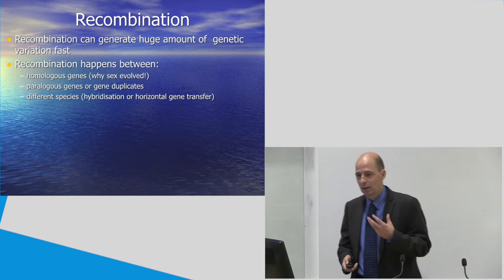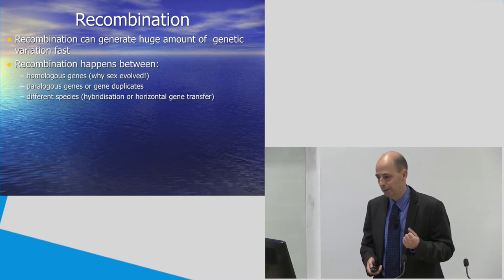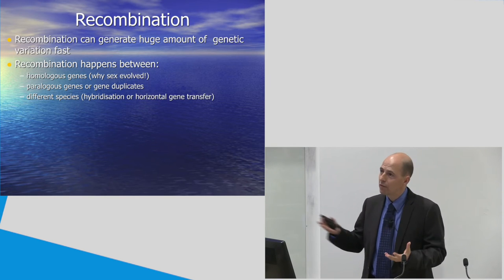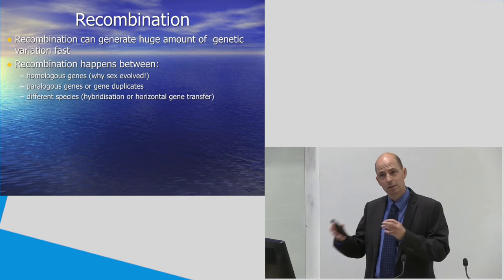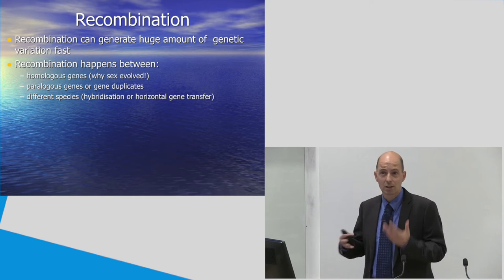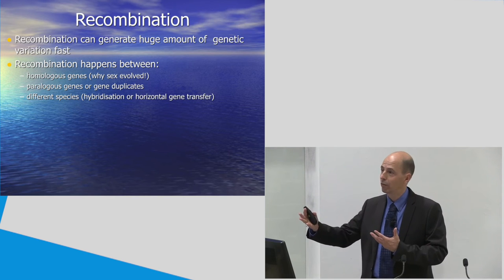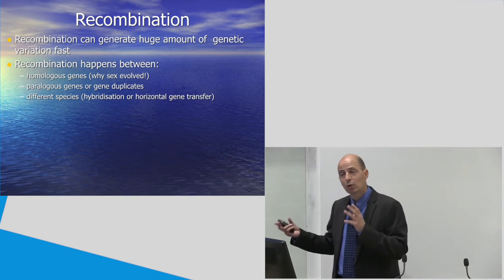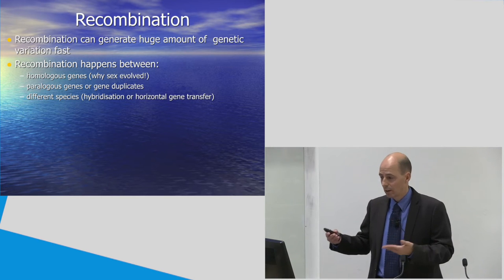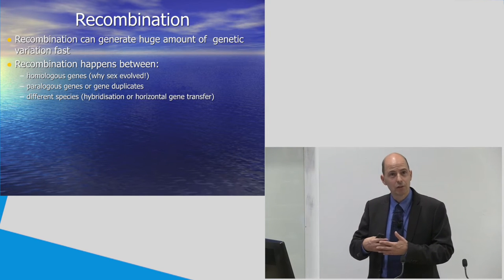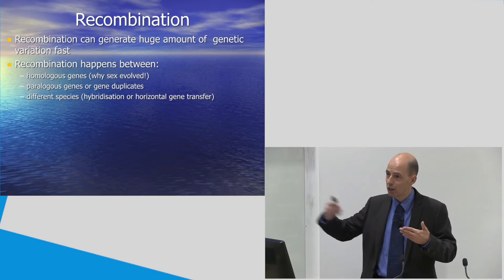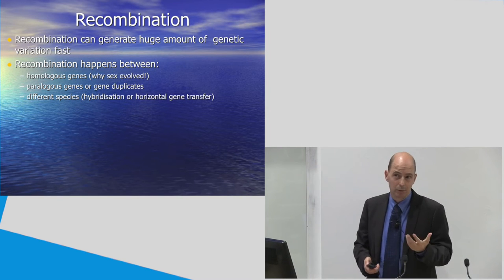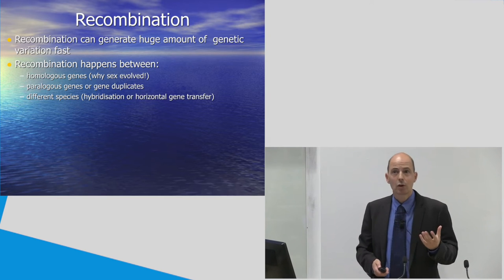Now, let me focus a little bit here on recombination. Because recombination generates a huge amount of variation very rapidly. And it's an important driver of adaptive evolution. Recombination can happen between different levels. It can happen at homologous genes, the same genes in different organisms. And this is really the reason that sex has evolved. It allows the exchange of variation between individuals and makes that the offspring are different from that of the parents. It can also happen between paralogous genes or gene duplicates. And this is, for example, gene conversion. And lots of genes are in multi-gene families where variation can be exchanged between the copies of the different genes. Recombination can also happen between different species or between different genera. And in that case, we talk about hybridization or horizontal gene transfer.